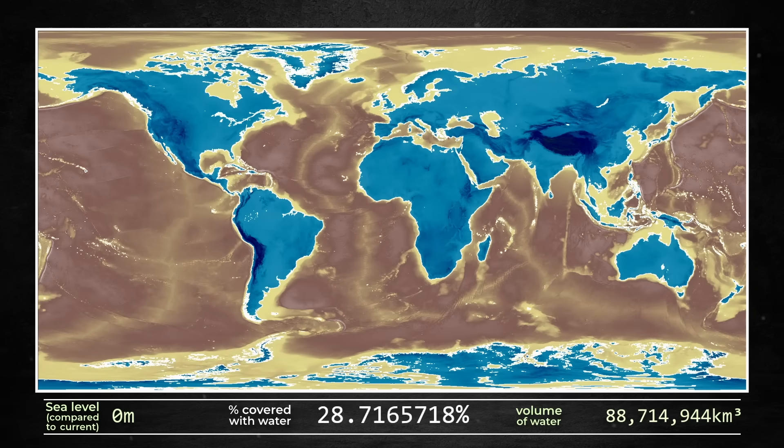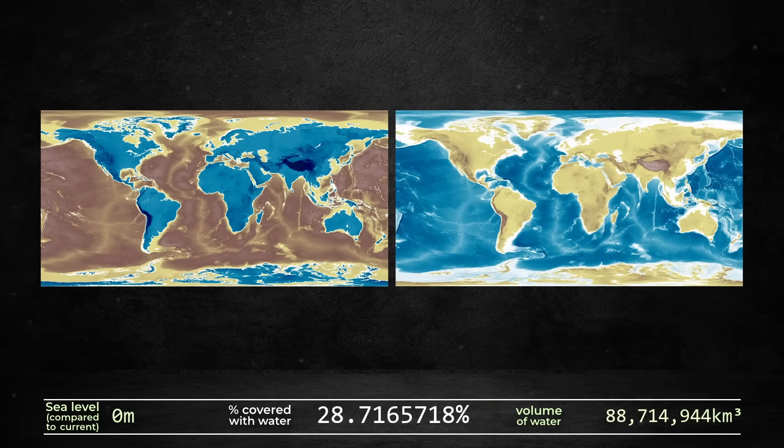When the sea level reaches zero, 28.7% of the Earth's surface is covered with water, creating a map that closely resembles Earth as we know it, but with land and oceans completely inverted.